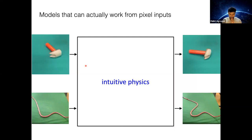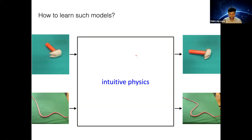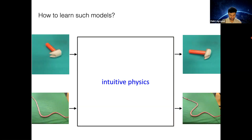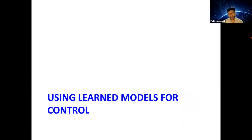Before we proceed, are there any questions on this part? I see nothing on the chat. So feel free to enter if you have a question — this part we covered before, so maybe you're already familiar with it. The next question is: how do we learn such models and how do we leverage these models for control?